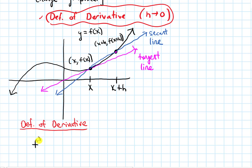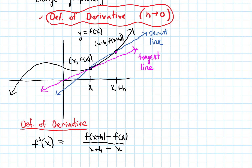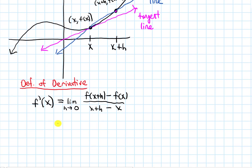I'm going to introduce some notation. I'll write f prime of x — this is the derivative of the function f at x, and it represents the slope of that tangent line. For the slope of the secant line, using change in y over change in x, it's f of x plus h minus f of x on top, and x plus h minus x on the bottom. To make it the slope of the tangent line exactly, I need to take a limit as h goes to 0. Simplifying, x plus h minus x is just h, so this is the limit as h approaches 0 of f of x plus h minus f of x, all over h.